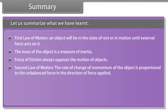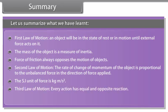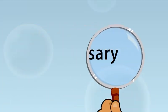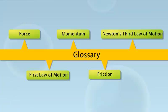First law of motion: An object will be in the state of rest or in motion until external force acts on it. The mass of the object is a measure of inertia. Force of friction always opposes the motion of objects. Second law of motion: The rate of change of momentum of the object is proportional to the unbalanced force in the direction of force applied. The SI unit of force is kilogram meter per second square. Third law of motion: Every action has equal and opposite reaction. The total momentum is always conserved.